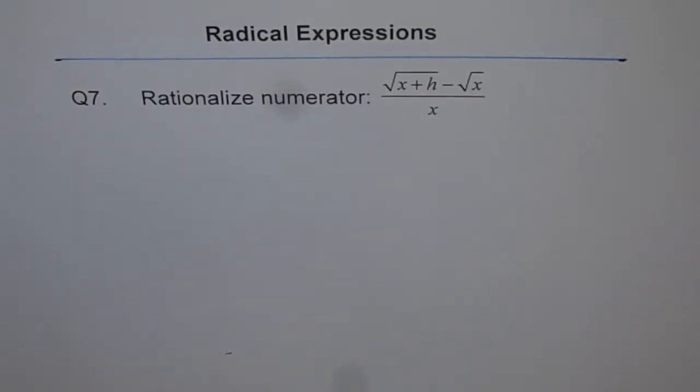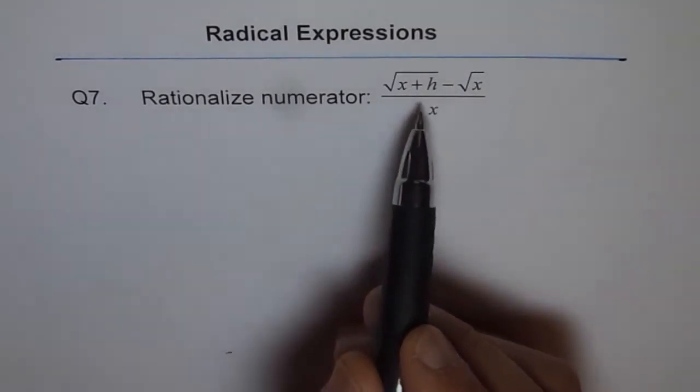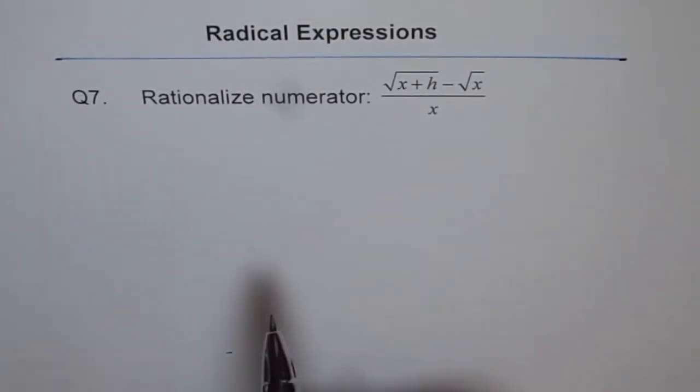Radical expressions. Question 7. Rationalize numerator: square root of x plus h minus square root of x divided by x.